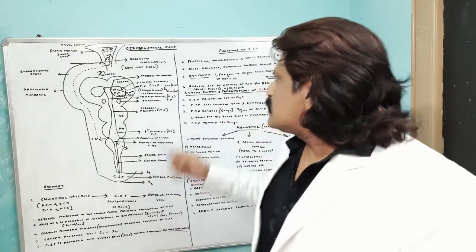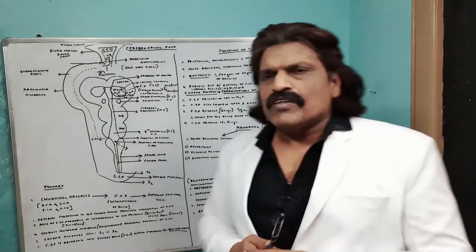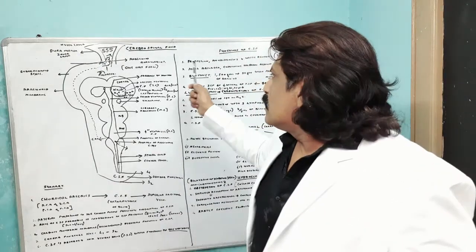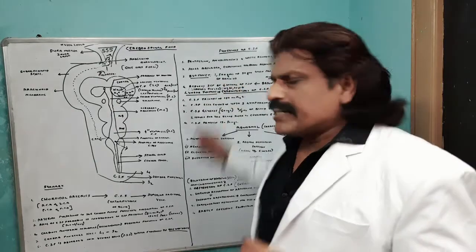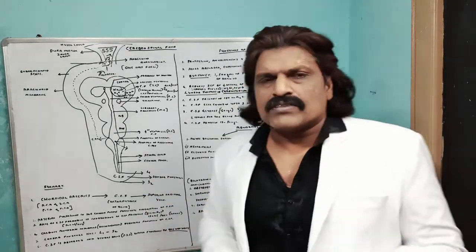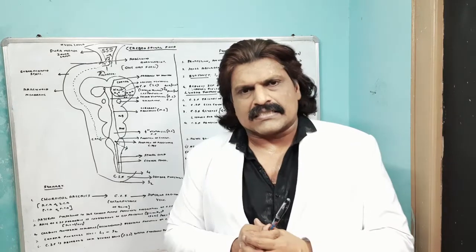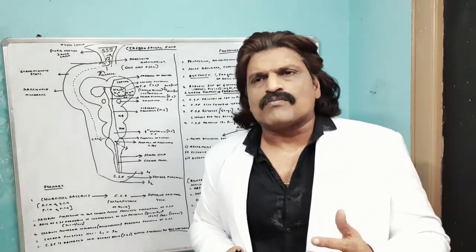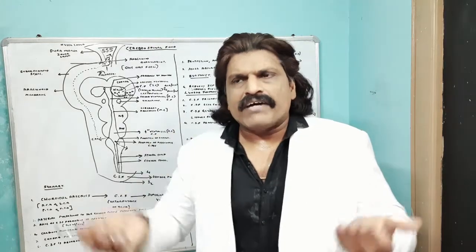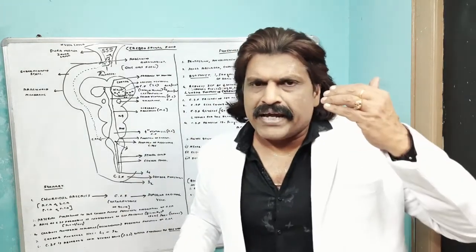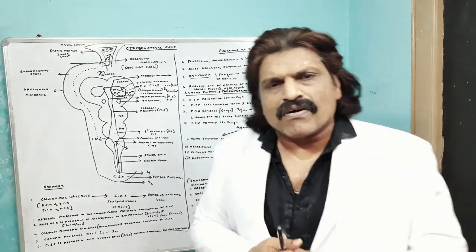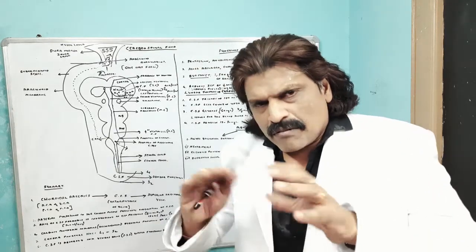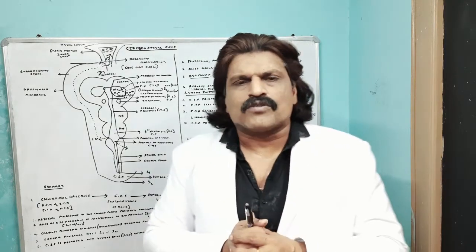Now let's see the functions of the cerebrospinal fluid. First, it maintains homeostasis — it protects, nourishes, and removes waste products. Second, it acts as a shock absorber. Especially in trauma, when we have a head injury, the brain — if not for the cerebrospinal fluid — would directly hit the bone and cause a lot of injury. Therefore the cerebrospinal fluid acts as a shock absorber in head injury and protects the brain.